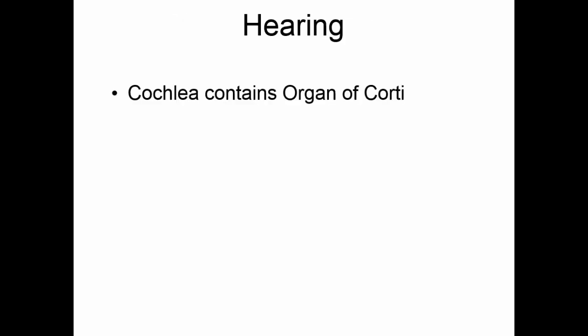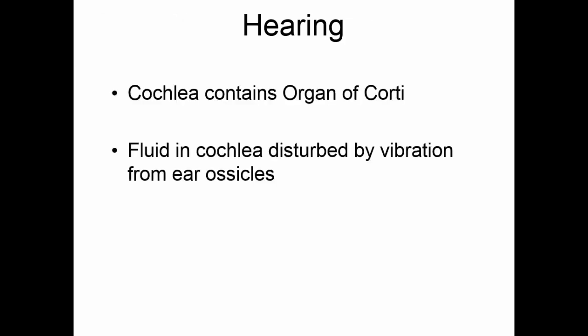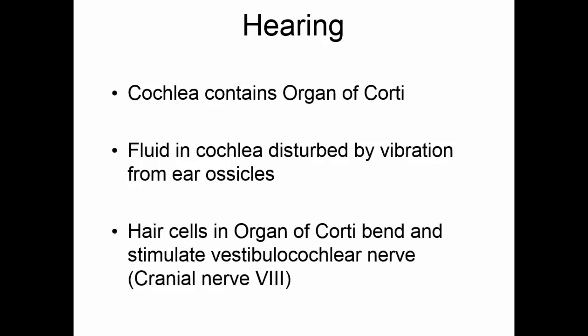The cochlea contains the organ of Corti. This is a fluid-filled organ, and when the fluid in the cochlea is disturbed by the vibration from the ear ossicles, it causes the hair cells in the organ of Corti to bend. This will stimulate cranial nerve eight, and the impulses will be taken to the portion of the brain that will interpret this as sound.